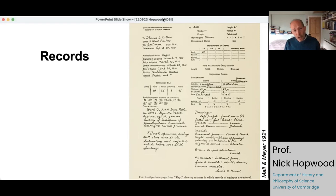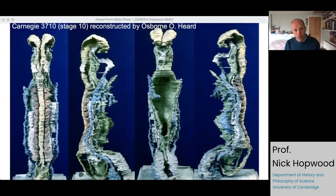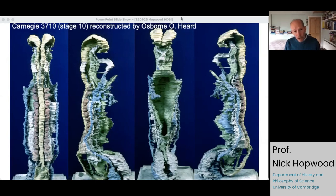They serially sectioned and reconstructed many hundreds of embryos. Here we're seeing four views of one model — stage 10. They photographed sections on the cut surface of the block, magnified those onto wax plates, cut them out, stacked them up, filled the hole with plaster and then removed the wax. You can see they left the models unsmoothed, and this produced a lot of information about development and also about organ systems.